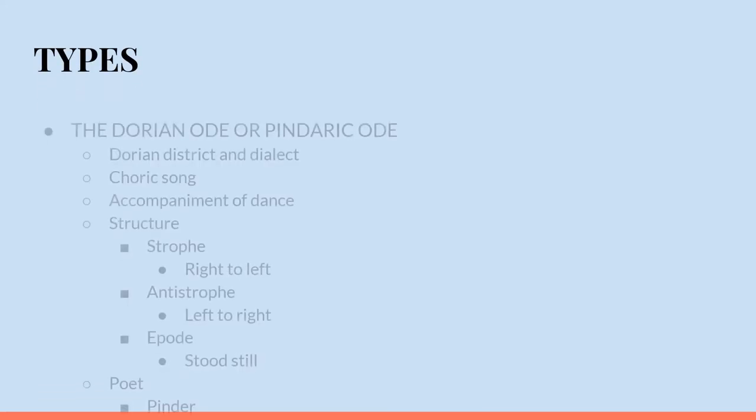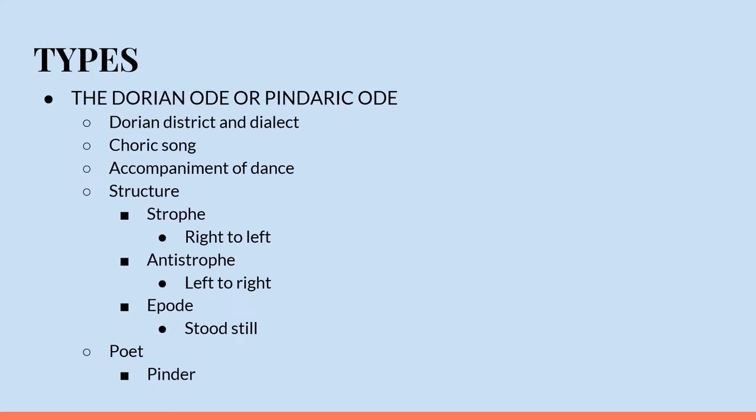The Greek ode had two important types: the first is the Dorian ode and the second is the Horatian ode. The Dorian ode is so called as it originated from the district Dorian. It was choric and it was sung to the accompaniment of a dance. Its structure was borrowed from the movements of the dancers.